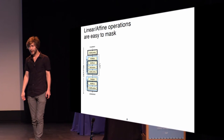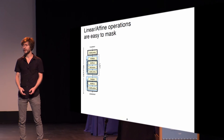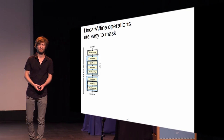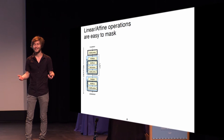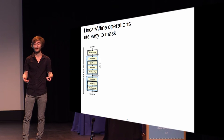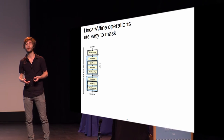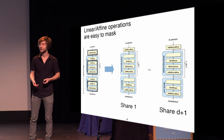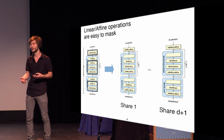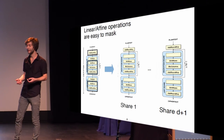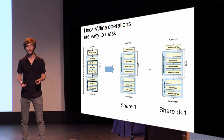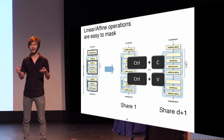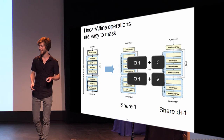If we want to apply this to AES, the first thing we do is mask the linear or affine functions. Since we use boolean masking, this is rather easy — we just assign one of those operations to one input share. There's a function you're all really accustomed to: it's called copy-paste. That's the really easy thing.